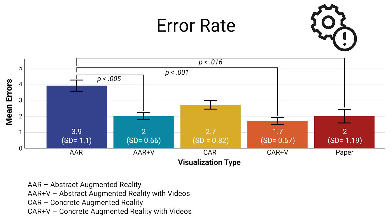The different visualization types lead to significantly different error rates. Participants with the concrete holograms with additional videos made only 1.7 from 11 possible errors on average. The abstract holograms with additional videos and the paper instruction performed well too — participants using these visualization types made two errors on average. The most errors occurred with the augmented reality visualization with only the abstract holograms, with 3.9 errors on average. This number is significantly higher than for the conditions with videos and the paper-based instruction.